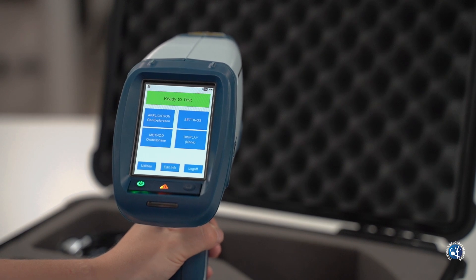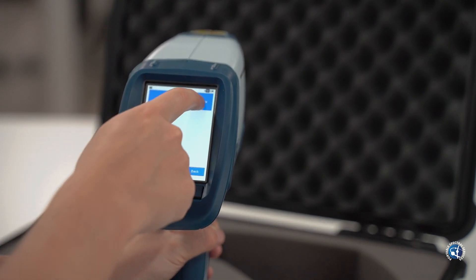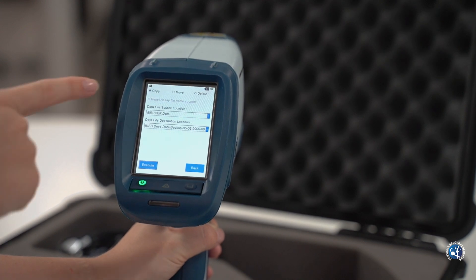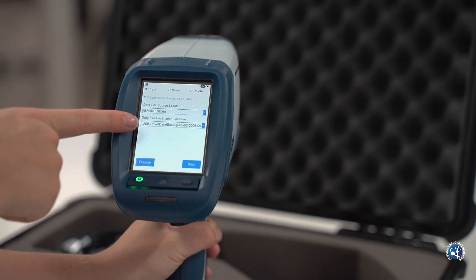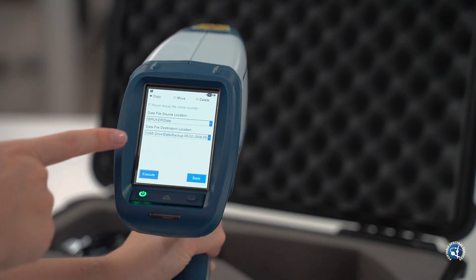To export the results, ensure a USB is in the USB port. From the home screen, press utilities, backup data. Check the destination is located to the USB and click copy. Then press execute. This will transfer the data.